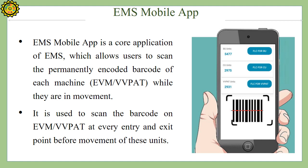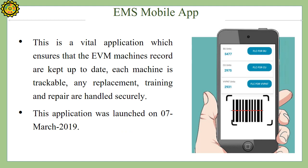EMS Mobile App is a core application of EMS which allows users to scan the permanently encoded barcode of each machine while they are in movement. It is used to scan the barcode on EVM and VVPAD at every entry and exit point before movement of these units. This vital application ensures that EVM machine records are kept up to date, each machine is trackable, and any replacement, training, and repair are handled securely.